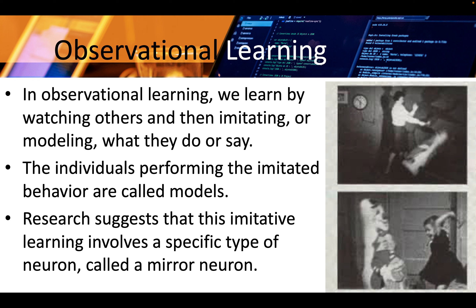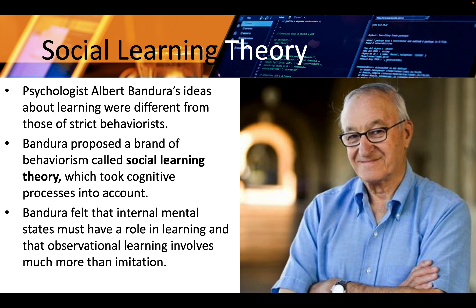In observational learning, we learn by watching others and then imitating or modeling what they do or say. The individuals performing the imitated behavior are called models. Research suggests that this imitative learning involves a specific type of neuron called a mirror neuron. Psychologist Albert Bandura's ideas about learning were different from those of strict behaviorists. Bandura proposed a brand of behaviorism called social learning theory which took cognitive processes into account, and felt that internal mental states must have a role in learning.